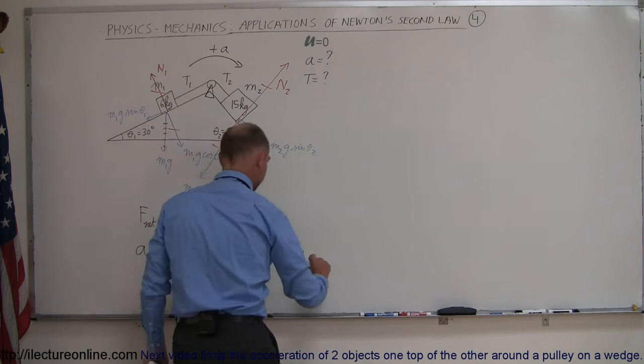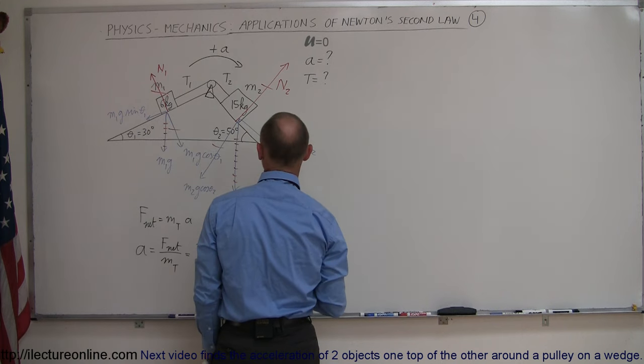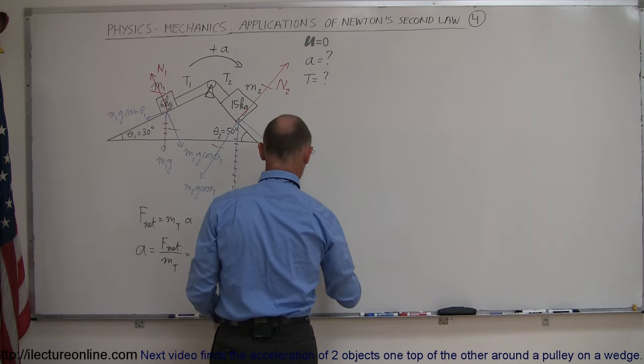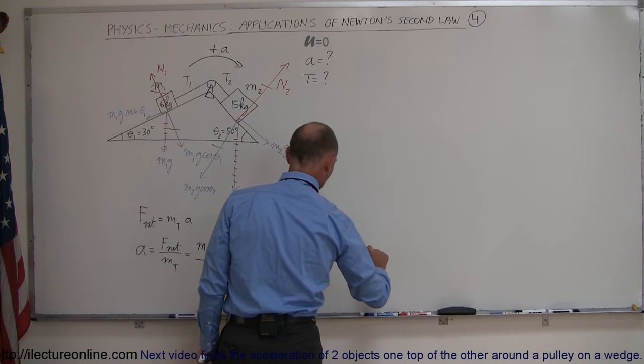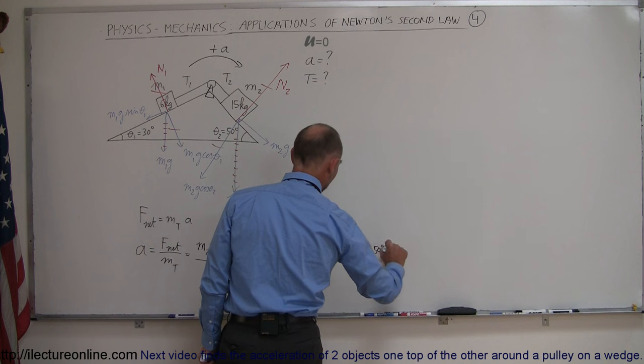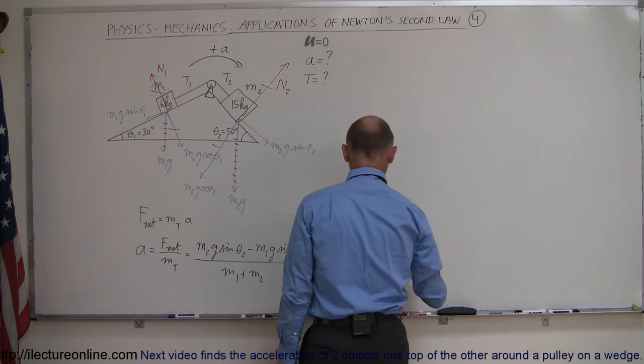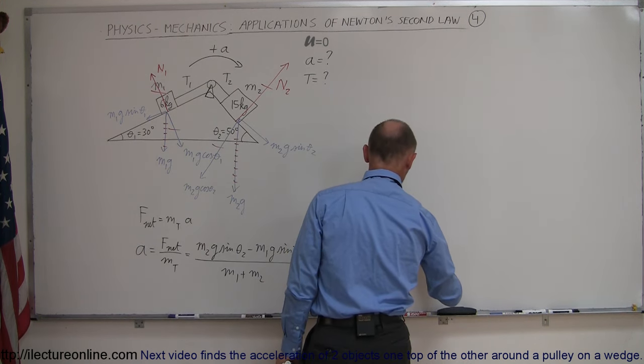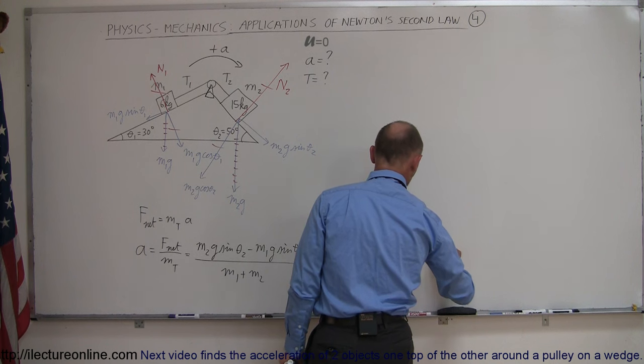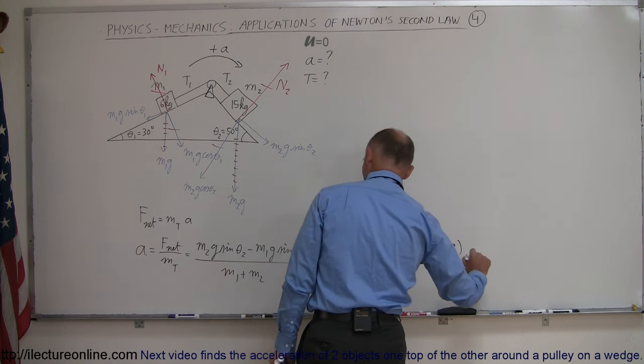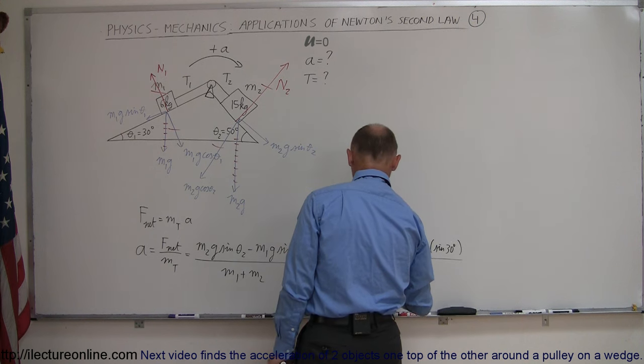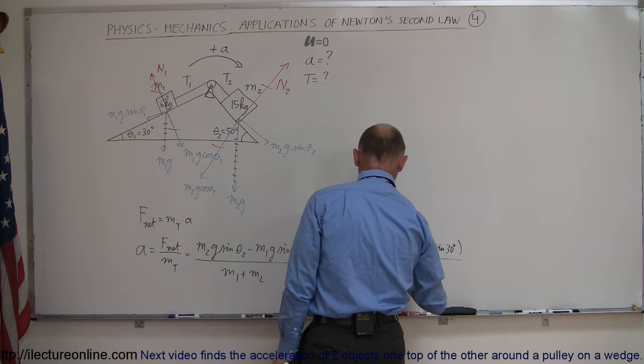Let's plug in the numbers. I'll leave out the units to make it a little cleaner. m2 was 15, g is 9.8, and we have the sine of 50 degrees minus m1 which is 6, g is 9.8 times the sine of 30 degrees which of course is one half, all divided by the sum m1 is 6 and m2 is 15 kg.